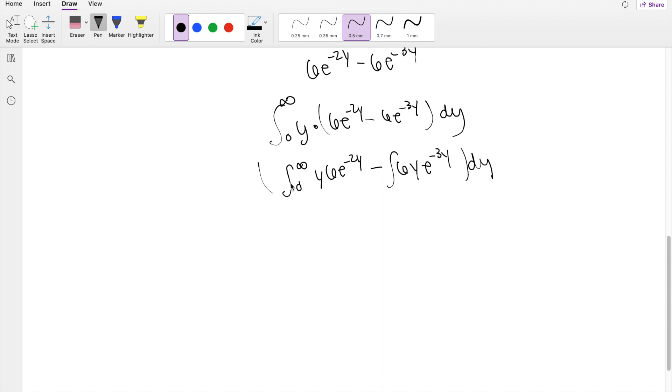So moving on, this is just an IBP problem, integration by parts. If you haven't watched my IBP video, I definitely think you should. Where u equals 6y, so du equals 6. And dv equals e^(-2y), so v must equal -1.5e^(-2y).